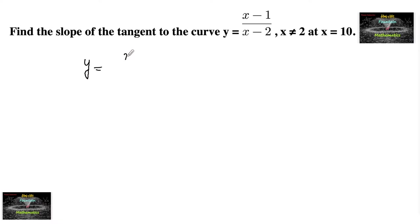Given curve equation y equals x minus 1 over x minus 2, where x is not equals to 2. The slope of the tangent to this curve at x equals 10 can be taken as dy by dx at x equals 10.